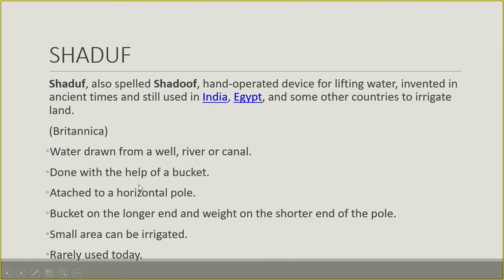Shadav basically consists of a long horizontal pole used to draw water out from a well, river, or canal. This is done with the help of a bucket attached to the longer end of the horizontal pole, whereas a weight is attached to the shorter end. This method is used to irrigate only a small area of land and is rarely used today.